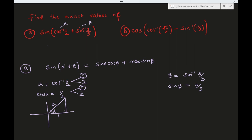We need to find the opposite side, which is the square root of 2 squared minus 1 squared, giving us the square root of 3.